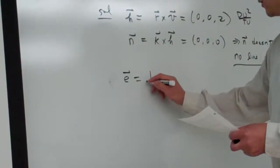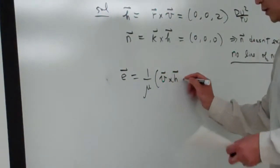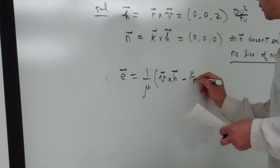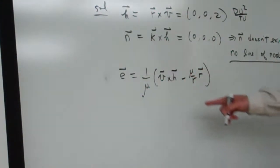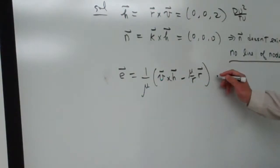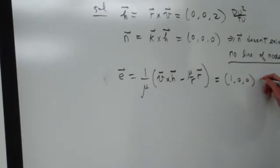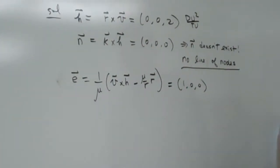Eccentricity, that one is 1 over mu. And we put into here, v cross h minus mu over r, r. Okay, so to determine e, we have everything in place. So this one is equal to 1, 0, 0.